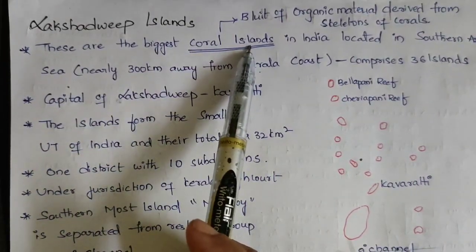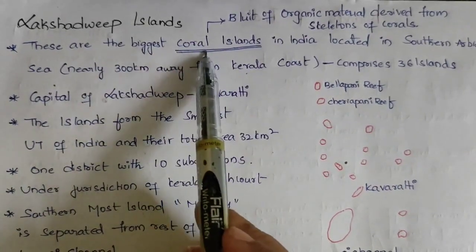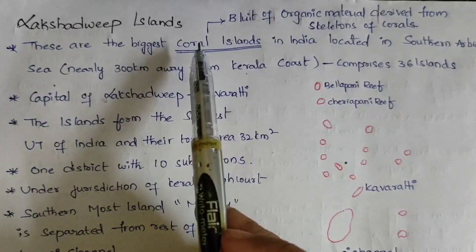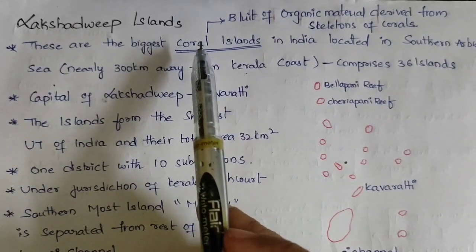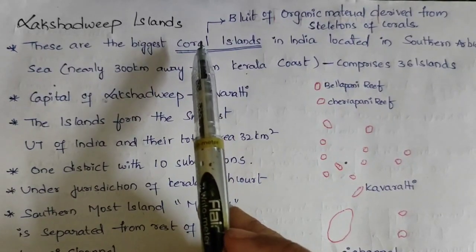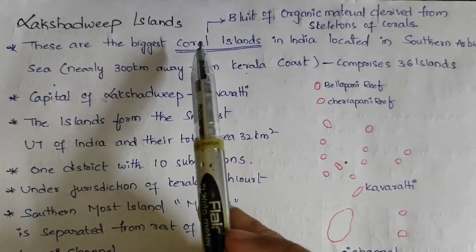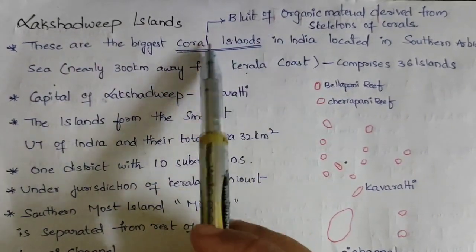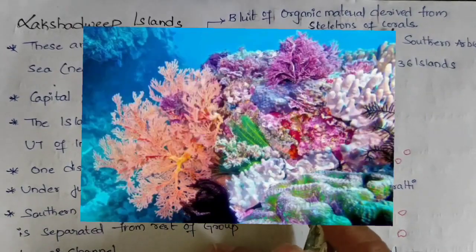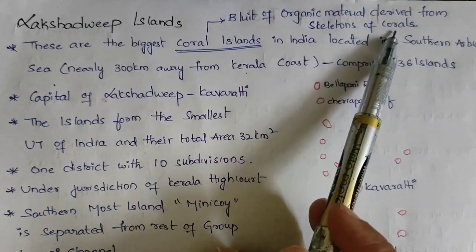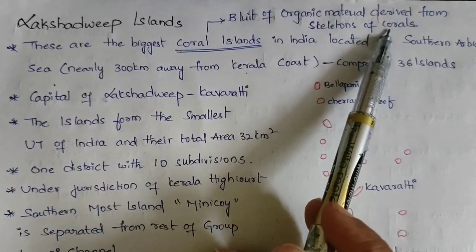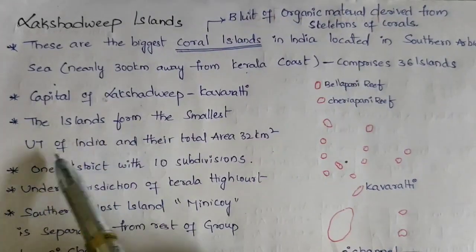These coral islands — corals are living organisms which look like sea plants, but they are not plants. They are tiny living organisms that prepare their own skeleton. So these islands are coral islands. Lakshadweep are the biggest coral islands in India, built of organic matter derived from the skeletons of corals.